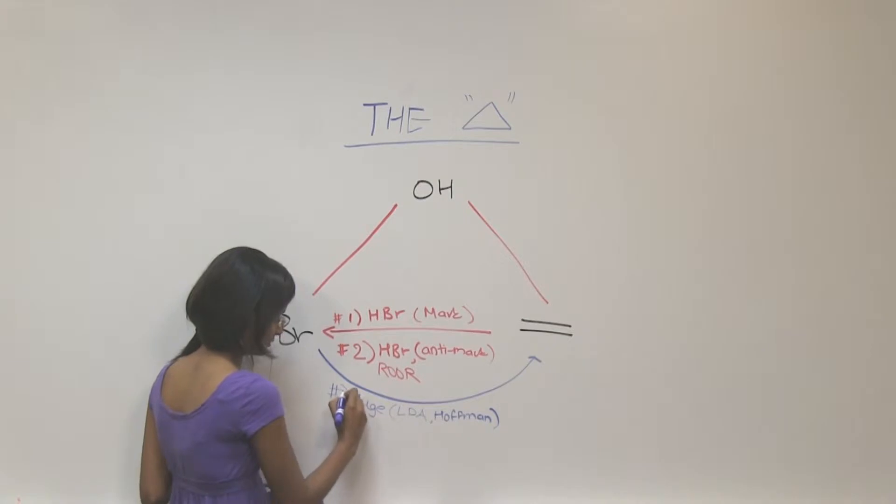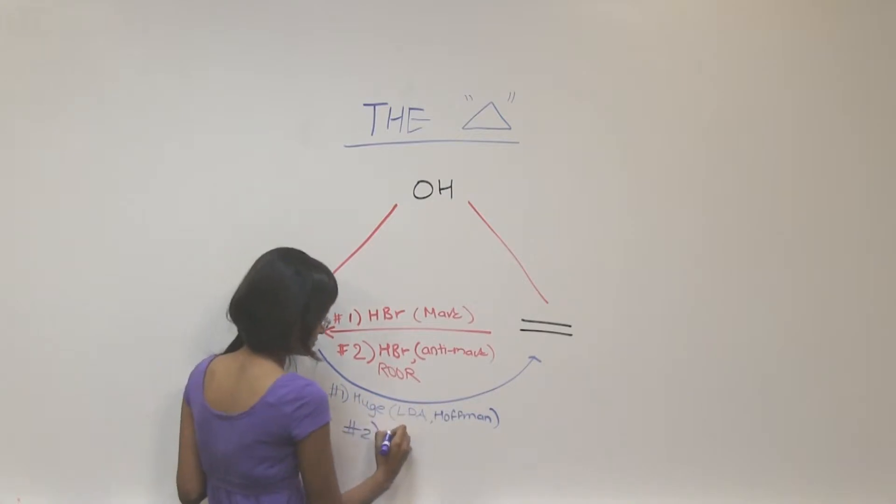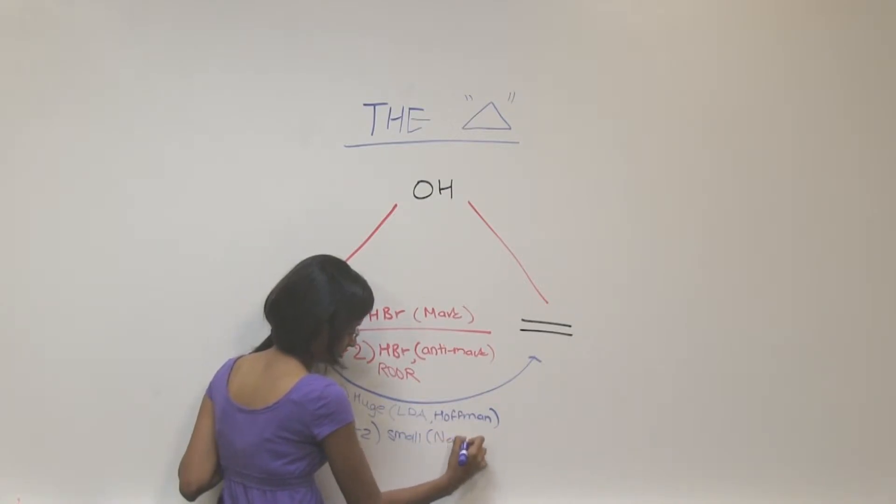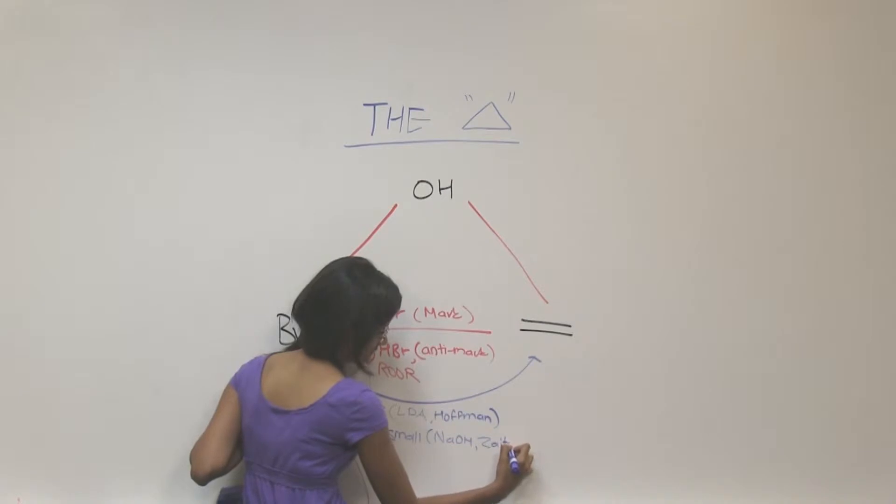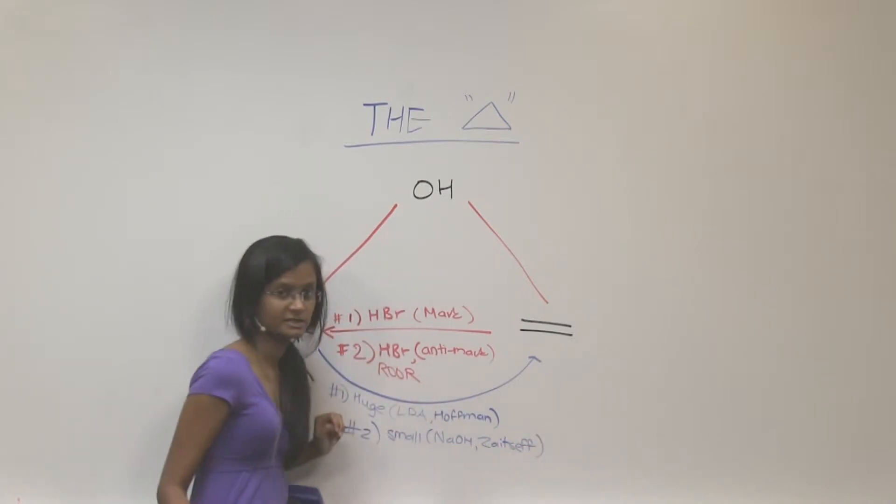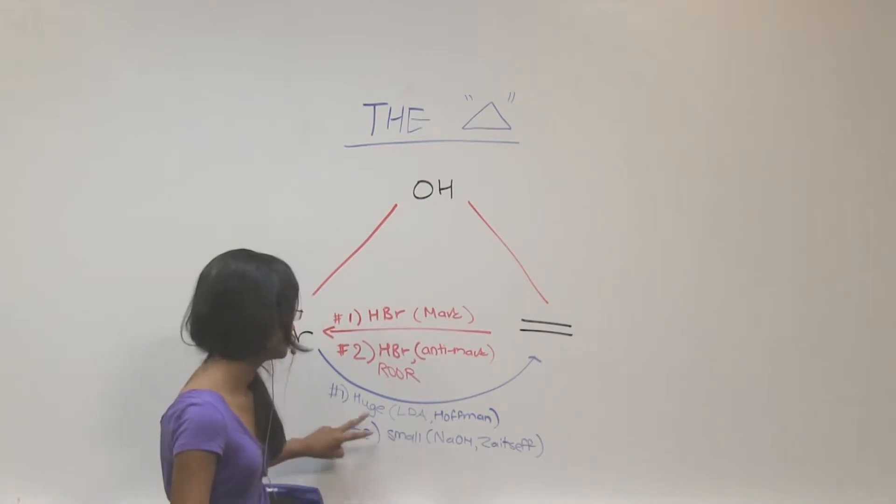And the second way is using a smaller base like NaOH, and that will get you to the Zaitsev product. So these are the two kinds of bases you can use, and that will get you to two different products.